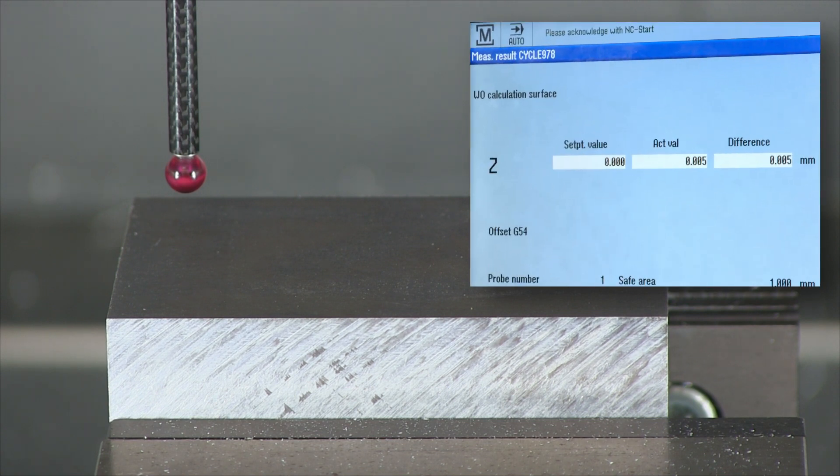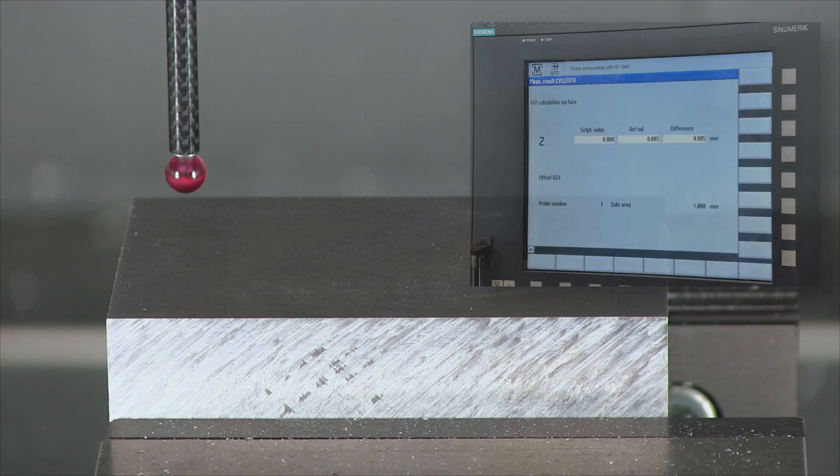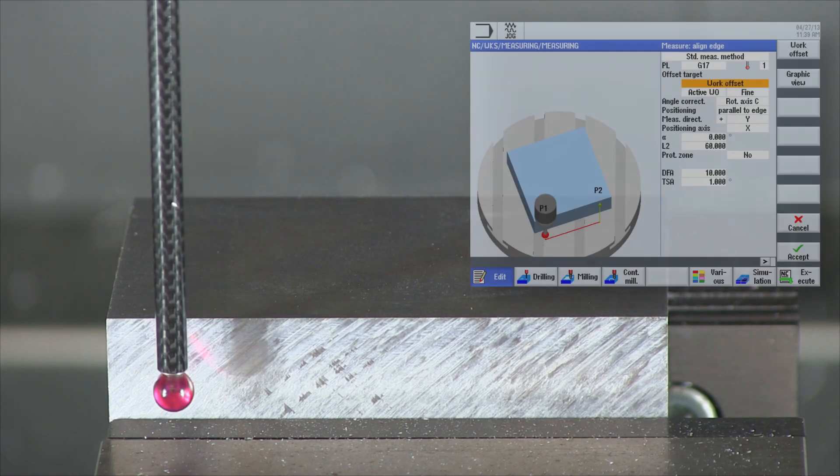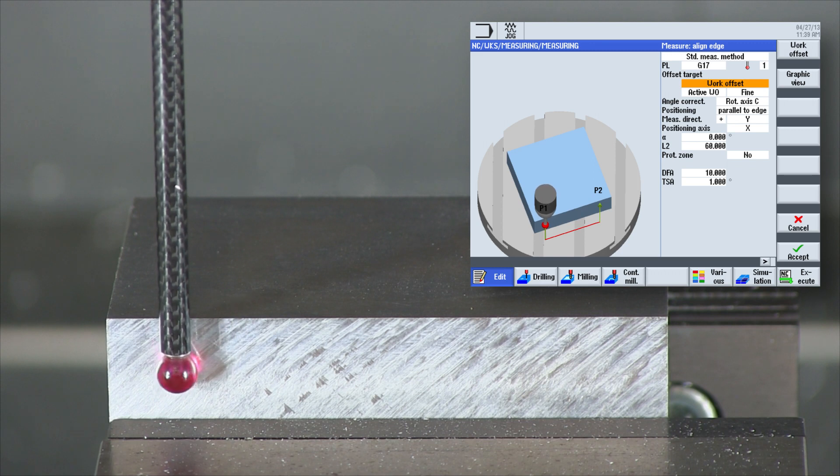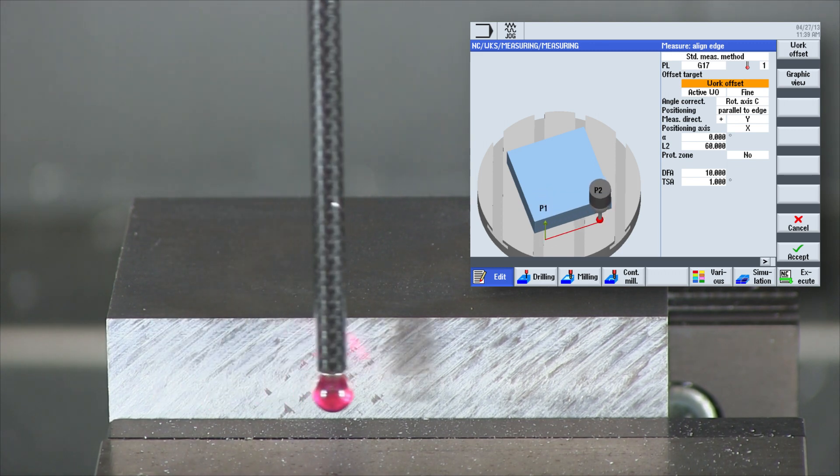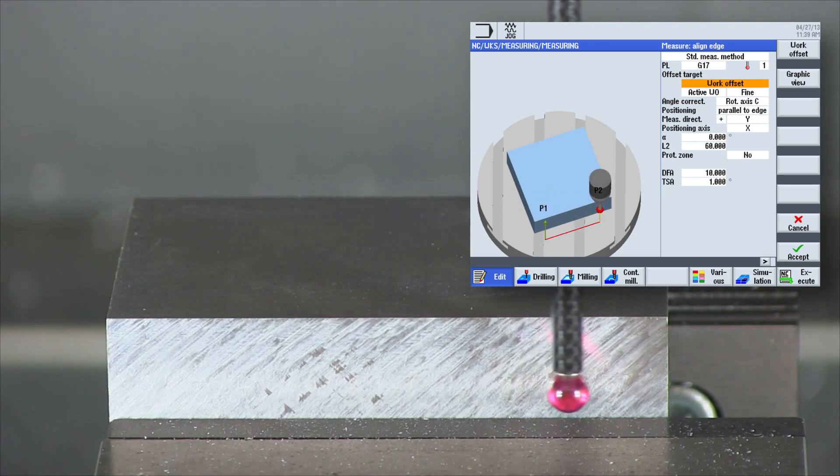First of all, the Z value is determined in the example for a workpiece setup. With the cycle aligned edge, the workpiece is then adjusted parallel to the X axis.